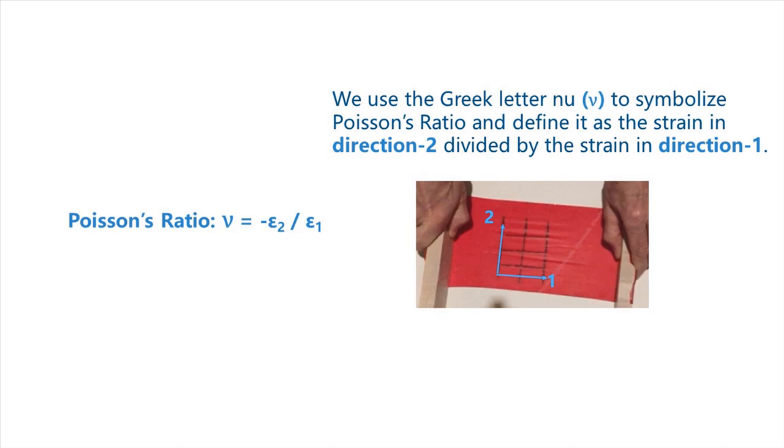We use the Greek letter nu to symbolize Poisson's ratio, and we define the Poisson's ratio as the strain in direction 2 divided by the strain in direction 1. For the rubber that the thin sheet was fabricated from, we calculate the Poisson's ratio to be 0.46.